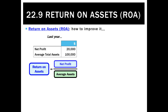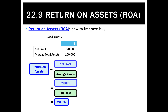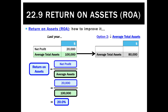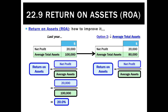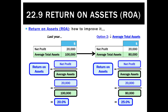The other way we can improve our ROA — if it was 20% last year — is if we can't make a bigger profit, maybe we can do it with fewer assets. The way to do that is to sell the ones that are unproductive, the ones we don't use anymore, the ones that are really inefficient. That way we can get our average assets down to $80,000, and still make a net profit of $20,000, ending up with a better return on assets ratio of 25%.